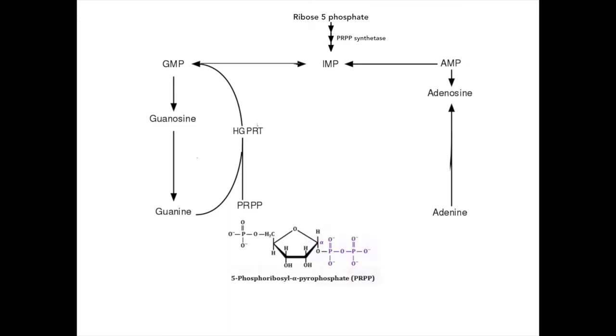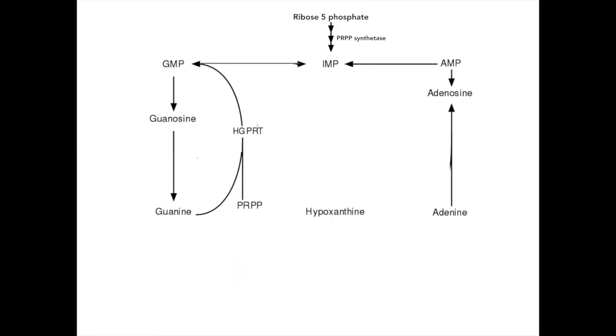PRPP is used as a source for the ribose sugar backbone and phosphate groups. Hypoxanthine can also be converted to its nucleotide IMP by the same enzyme, HGPRT, also with the addition of PRPP.